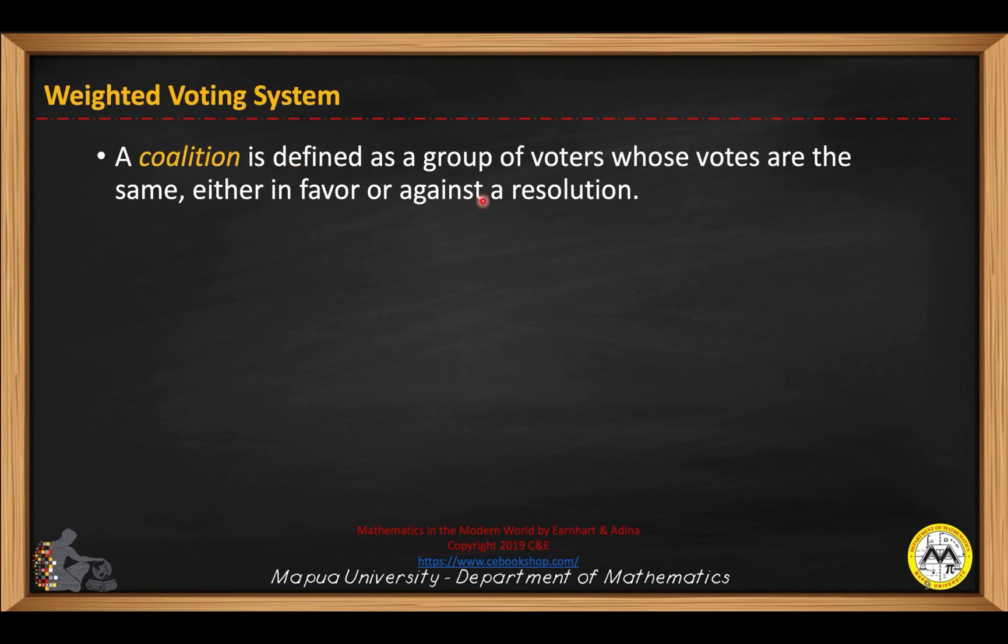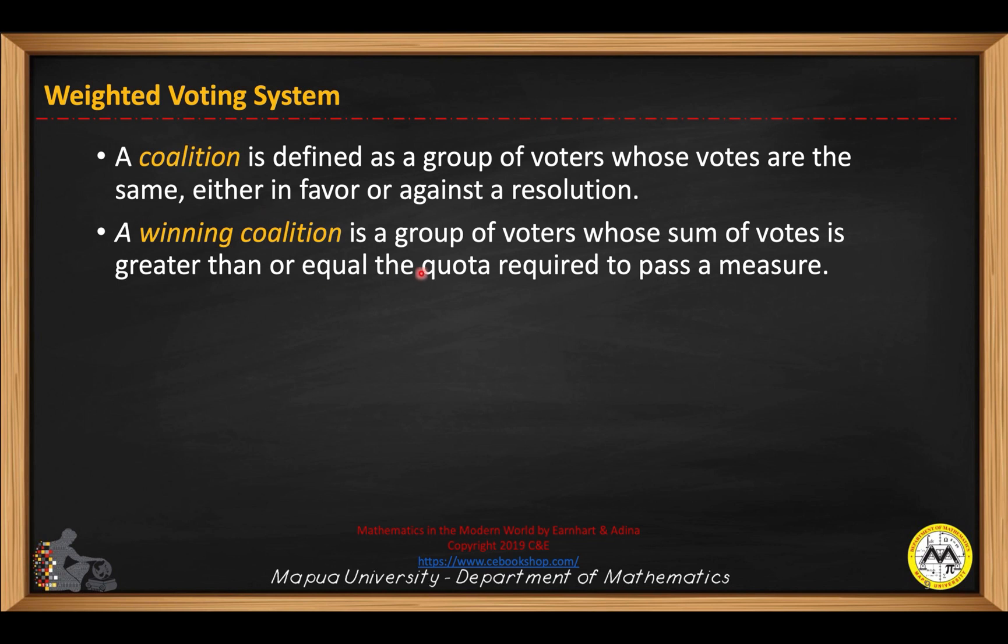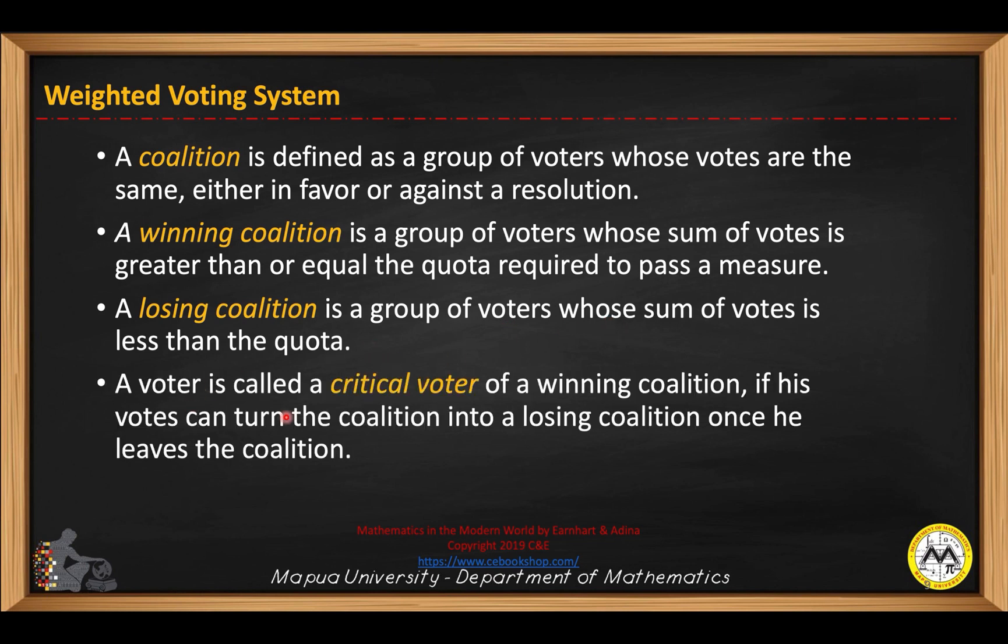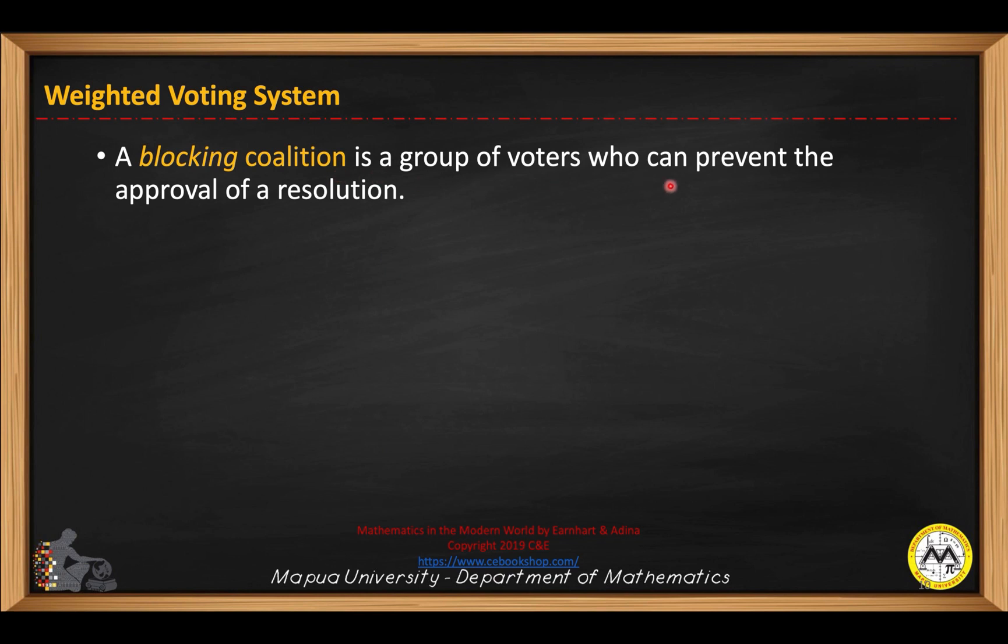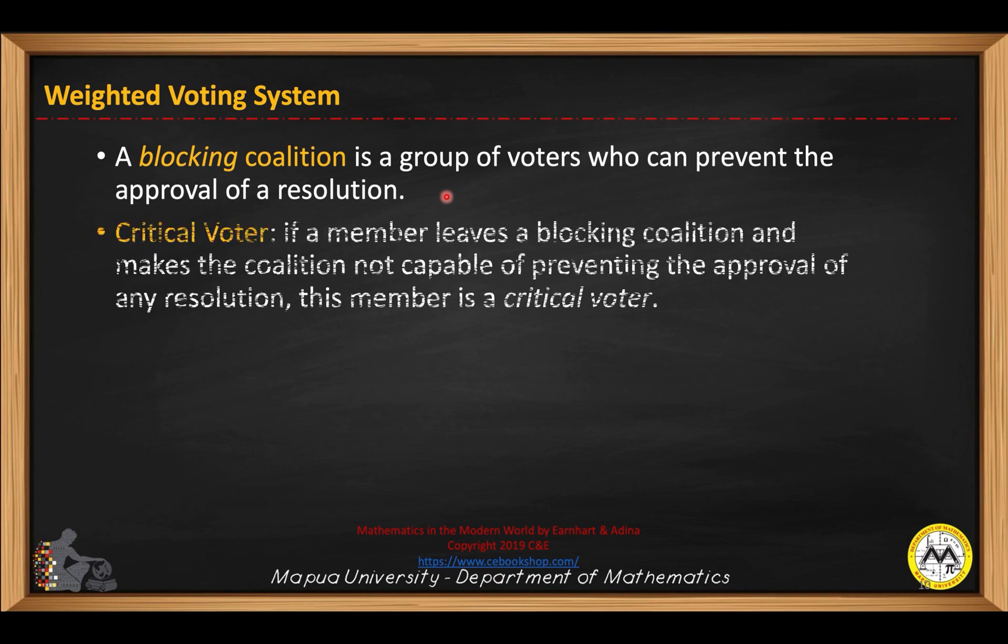A coalition is defined as a group of voters whose votes are the same, either in favor or against a resolution. A winning coalition is a group of voters whose sum of votes is greater than or equal to the quota required to pass a measure. A voter is called a critical voter of a winning coalition if their votes can turn the coalition into a losing coalition once they leave. A blocking coalition is a group of voters who can prevent the approval of a resolution. A critical voter is a member who leaves a blocking coalition and makes it not capable of preventing the approval of any resolution.